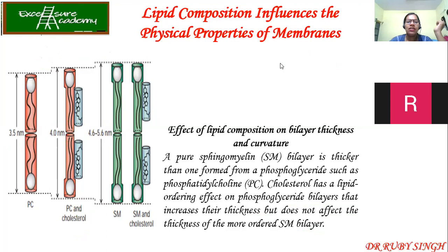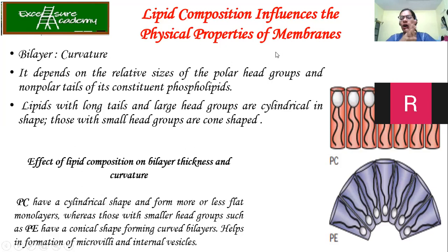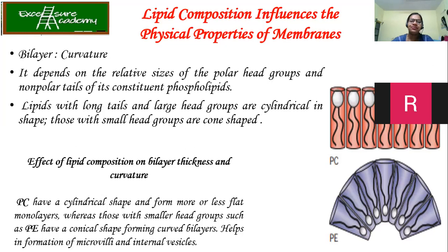Now, bilayer curvature. Till now we have discussed how membrane phospholipids are able to move laterally and rotationally, and the fluidity of membranes in terms of saturated, unsaturated, and the role of cholesterol. Bilayer curvature is one more factor that decides the structure and functions of the plasma membrane. It depends on the relative size of the polar head groups and non-polar tails of its constituent phospholipids.